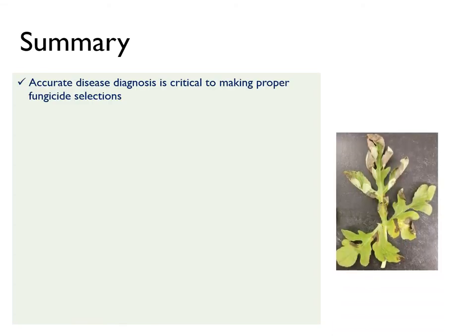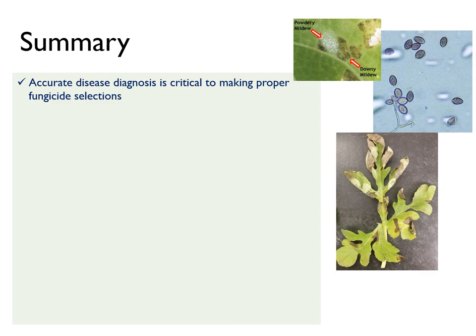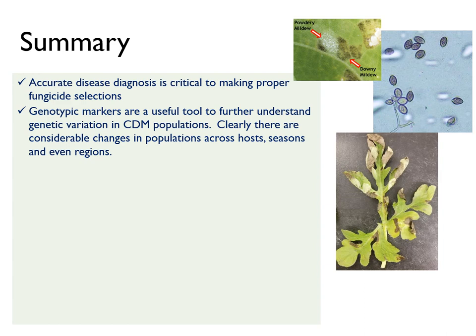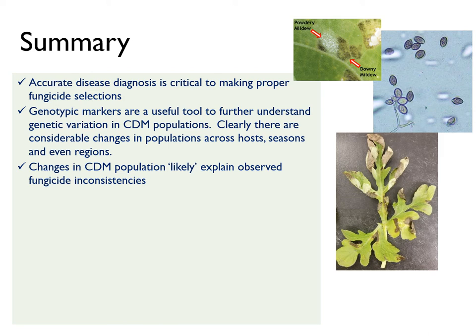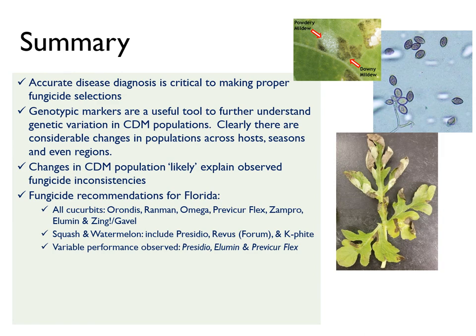In summary, I want to emphasize the importance of making an accurate diagnosis for disease management. In the case of downy mildew, you always want to confirm the presence of sporangia and sporangiophores before deciding which fungicides to apply. Genotypic markers are a useful tool to further understand genetic variation in cucurbit downy mildew populations. Clearly, there are considerable changes in populations across hosts, seasons, and even regions, and likely some of these changes explain the variable performance observed in fungicide trials. For Florida, I would recommend for all cucurbits the use of Orondis, Ranman, Omega, Previcure Flex, Zampro, Elumin, and Zing or Gavel in your fungicide rotations. For squash and watermelon, I would include Presidio, Revis, and Calfite. However, keep in mind the variable performance for products like Presidio, Elumin, and Previcure Flex, which is why I recommend using these products early in the season and minimizing their use during your rotation.